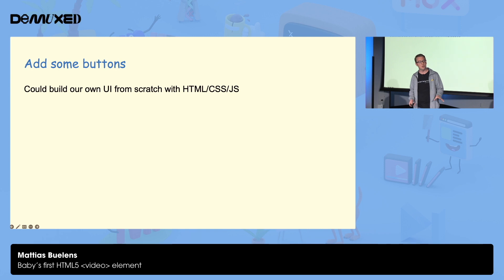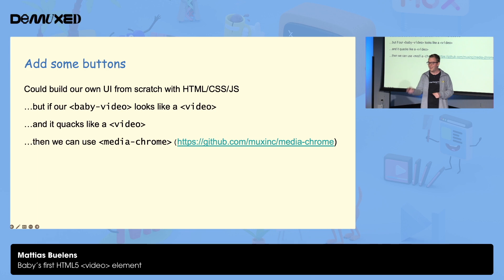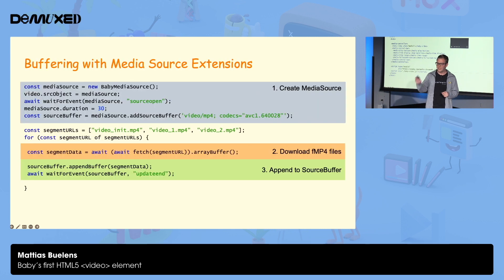We can control a video element entirely from JavaScript. But it's probably easier if we have a UI with a play button and a seek bar in there to do things with. You can build that in HTML and JavaScript and CSS yourself. But if it looks like a video element and it quacks like a video element, then you can use MediaChrome for your UI. So this is the boilerplate for MediaChrome. You add MediaChrome to your web page, you wrap your video elements in a media controller, you put some UI components in there, and there you have a working UI. It doesn't really do anything yet, because we haven't implemented anything in our video element itself. So let's keep going.